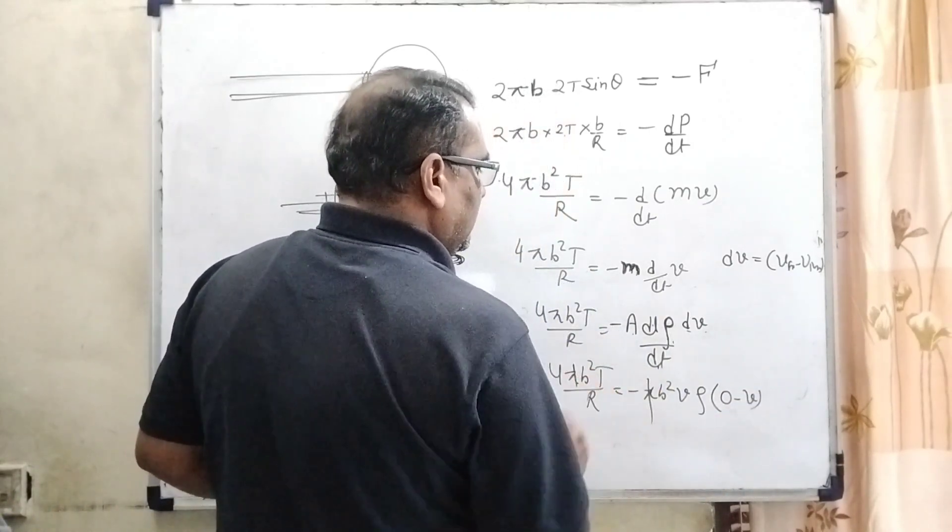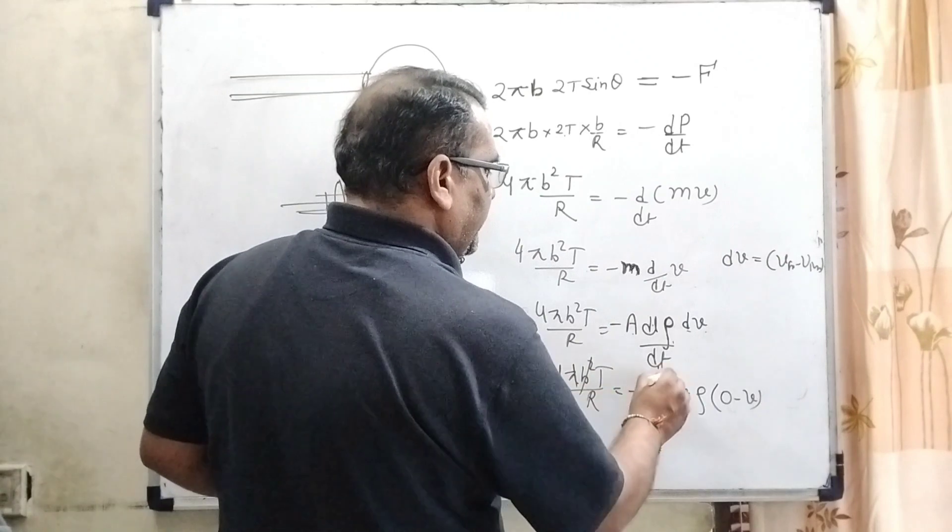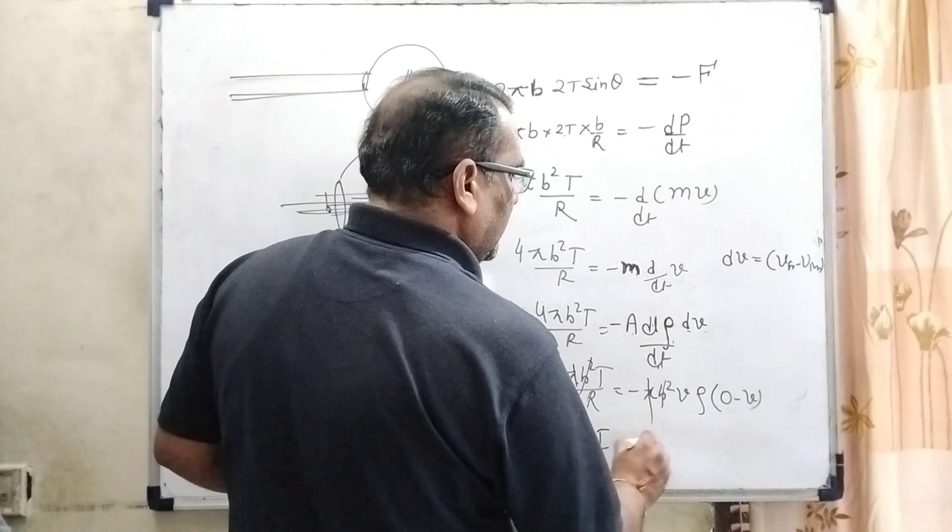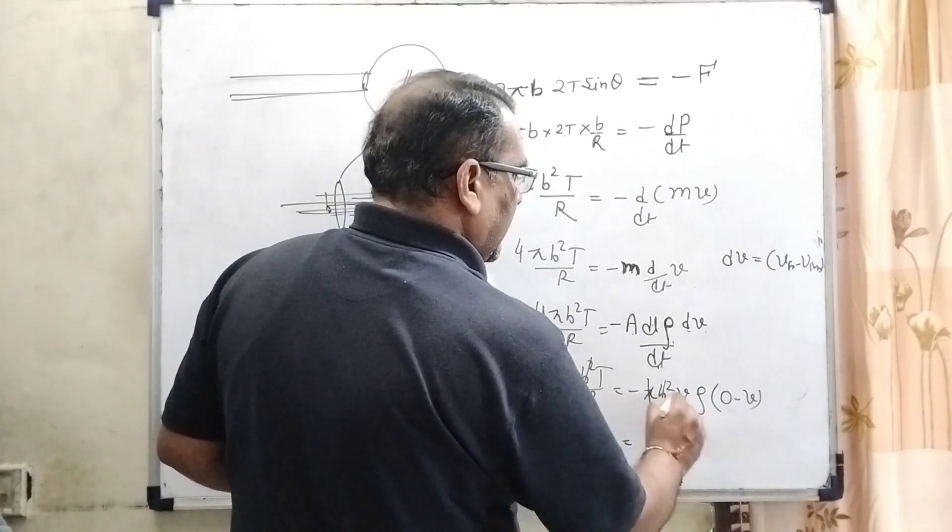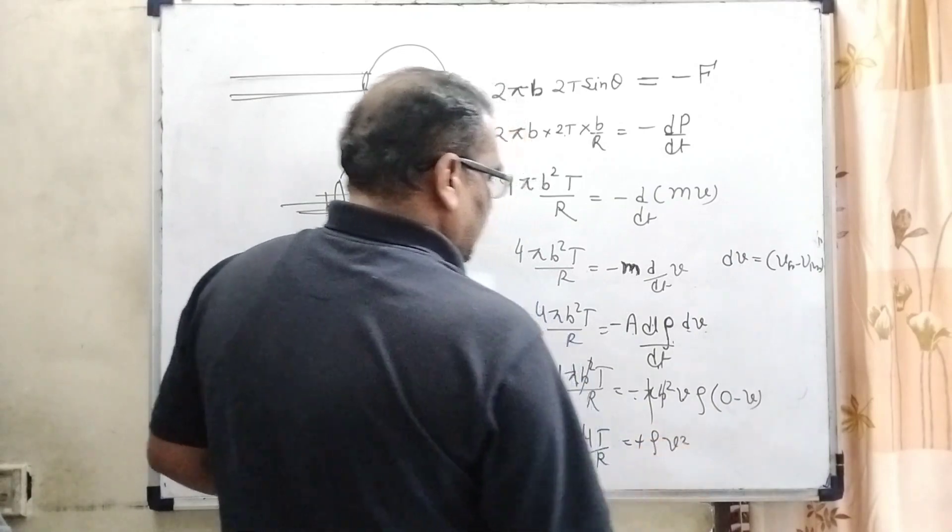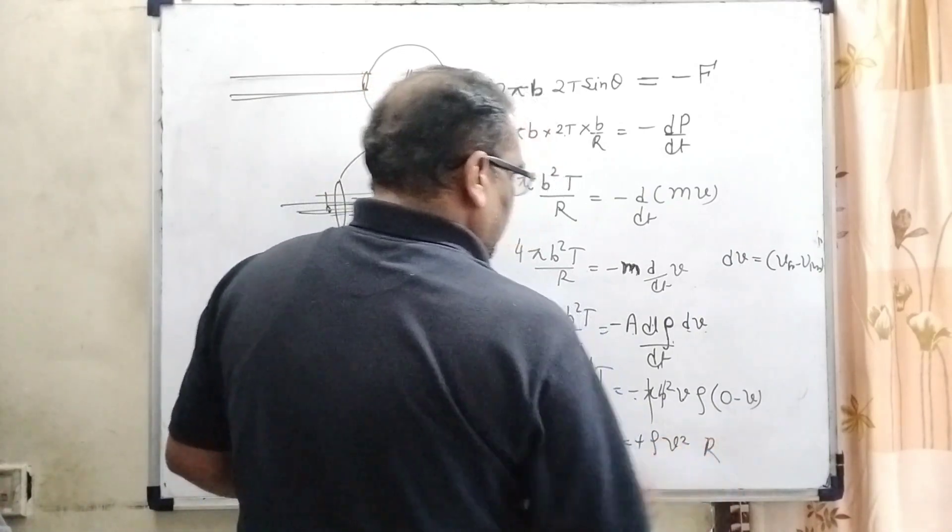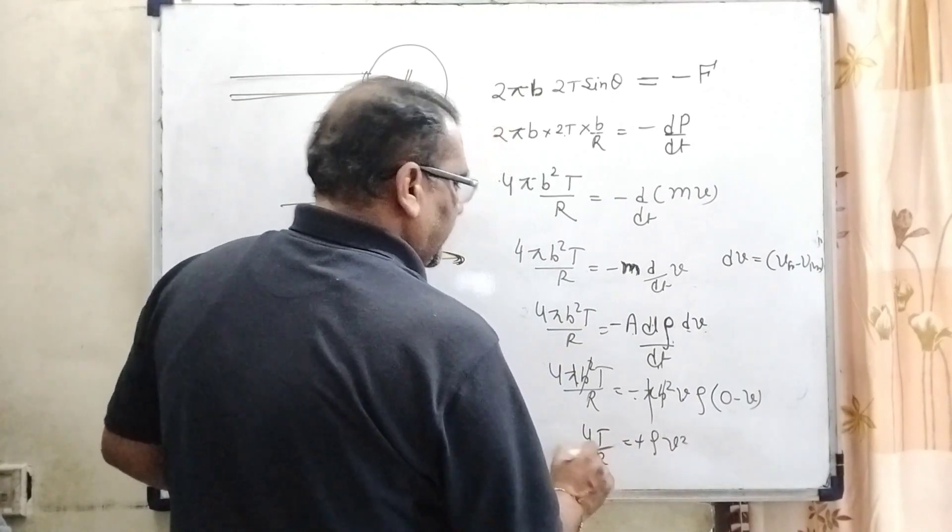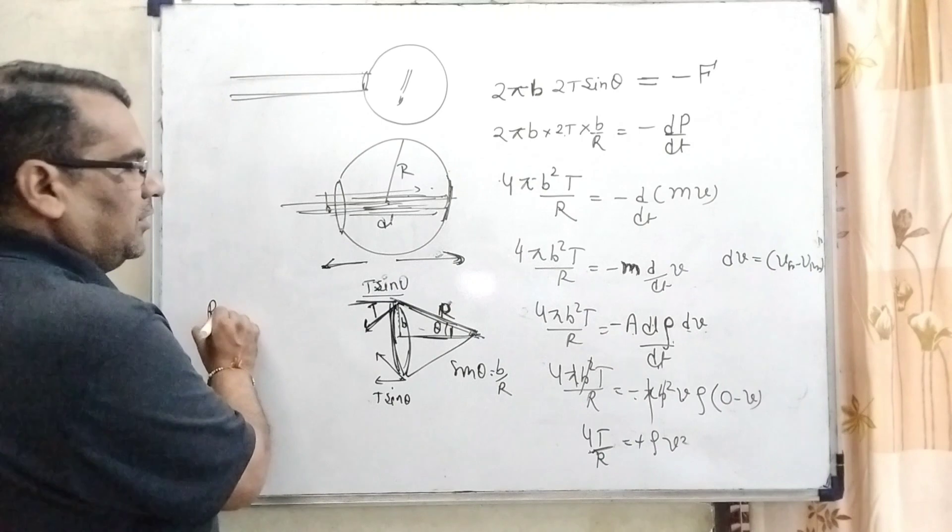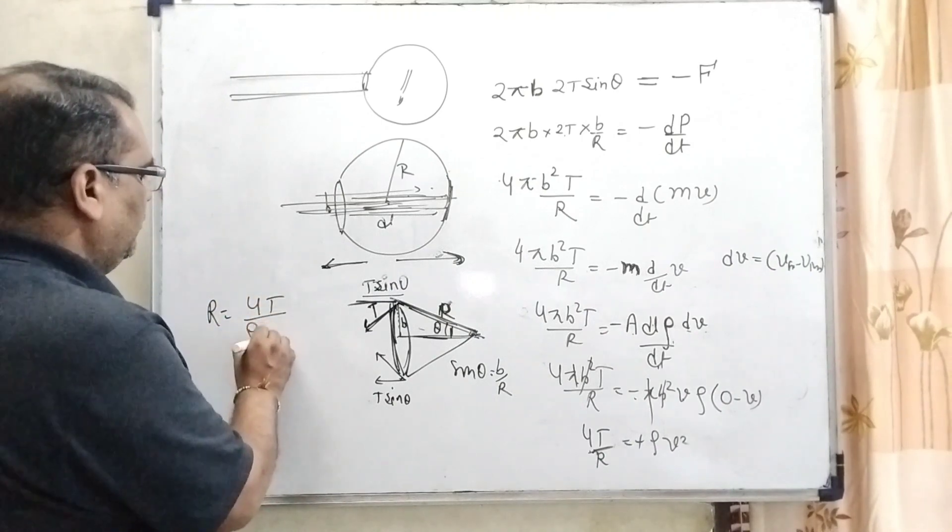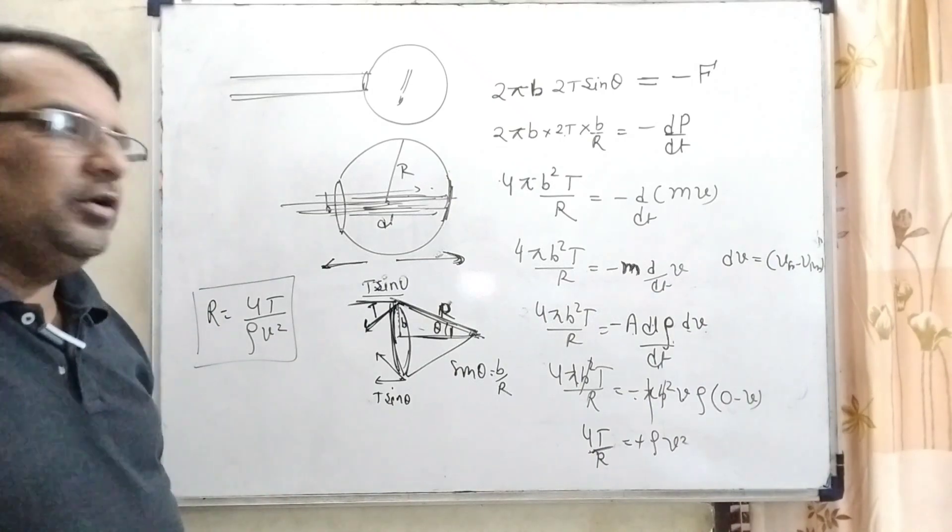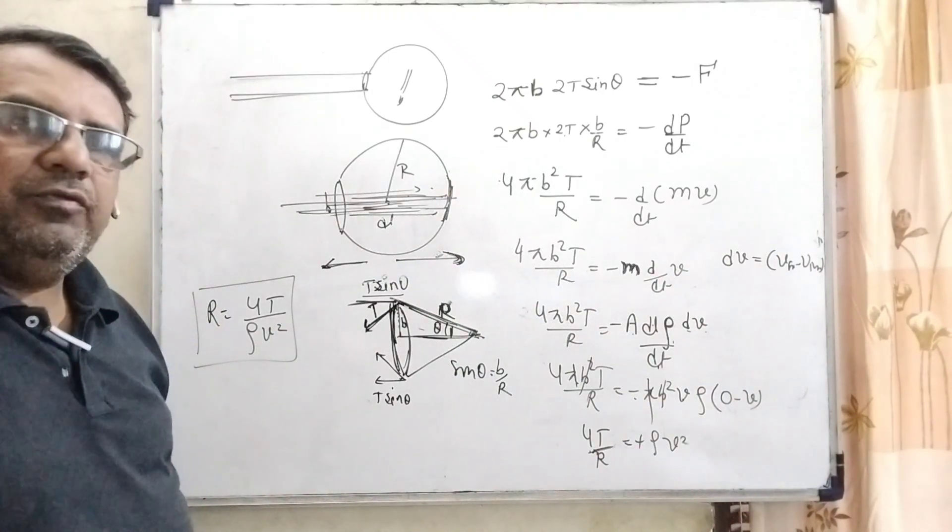So here π cancels, B² cancels, v cancels, then 4T/R equals ρv². Minus times minus gives plus. So in the next step, R equals 4T/ρv². So we get R equals 4T/ρv².